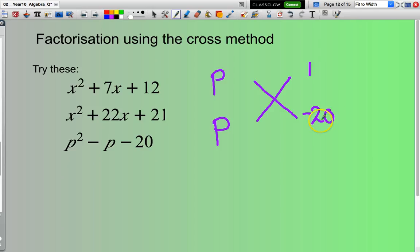So negative 20 times 1 is negative 20. Now let's have a look, going the other way, multiplying out the crosses. So negative 20 times p is negative 20p plus 1 times p, that's 1p. That's equal to negative 19p. Well, negative 19p is not the same as negative p.